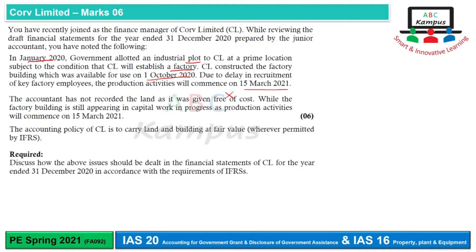The factory building is still appearing in capital work in progress, since production activities will commence on 15 March 2021 — even though it was available for use on 1st October 2020. The accounting policy of CL is to carry land and building at fair value, wherever permitted by IFRS.